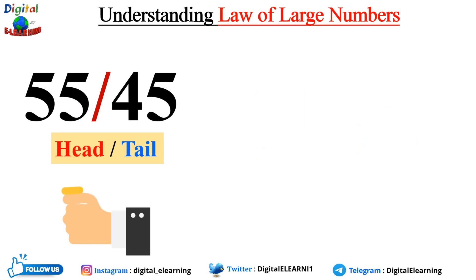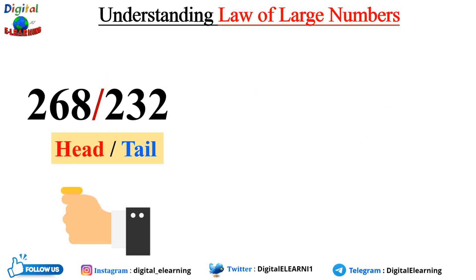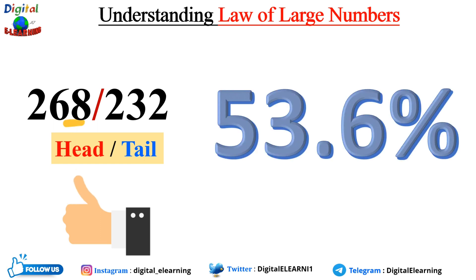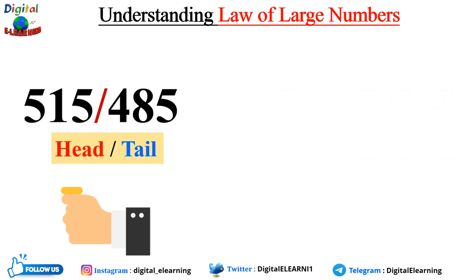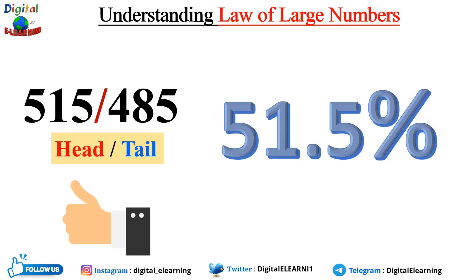If we increase the flips to 500, we get 268 heads out of 500 flips, resulting in a 53.6% proportion of heads. Lastly, if we increase the samples to 1,000, we get 515 heads out of 1,000 flips, resulting in a 51.5% proportion of heads.